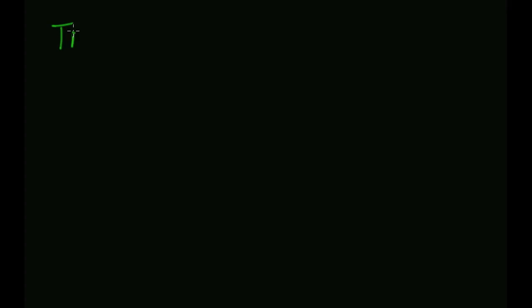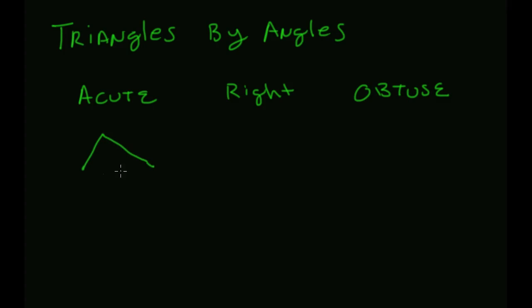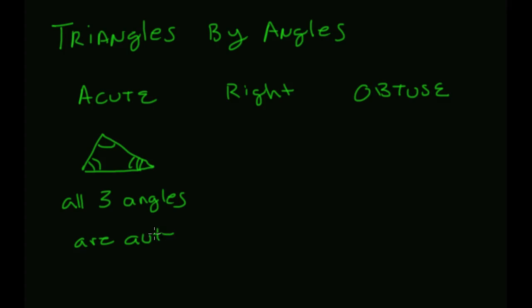Now that we have angle vocabulary, we can classify triangles by their angles. We have three types: an acute triangle, a right triangle, and an obtuse triangle. Acute triangles have all three angles as acute angles — so all three angles have to be less than 90 degrees.